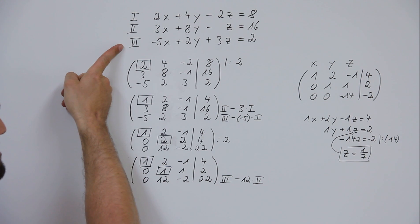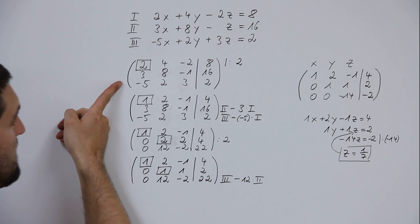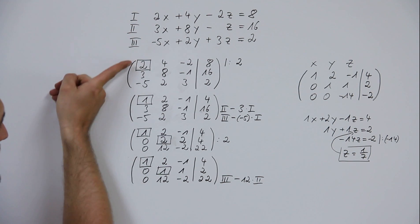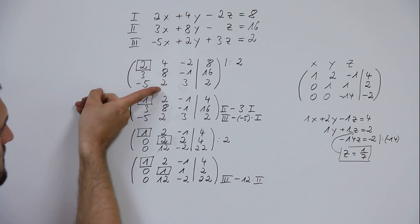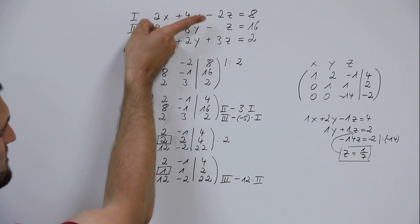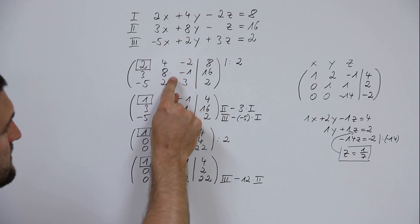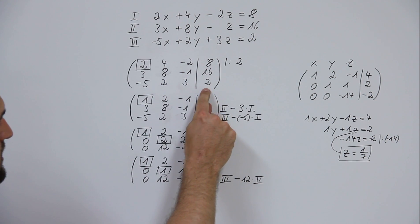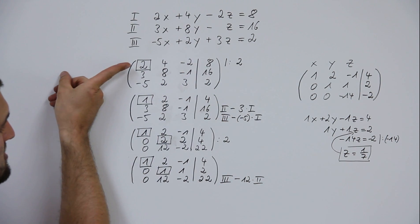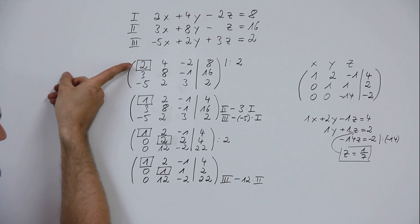We have equations one, two, and three. Put them down in the matrix form like this: two, three, minus five, four, eight, two, minus two, minus one. Attention: three, eight, sixteen, and two. Mark the so-called pivot element, always here in the corner.